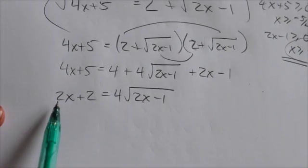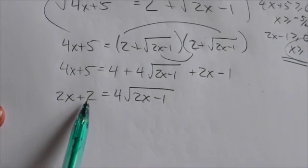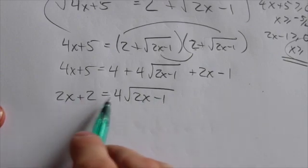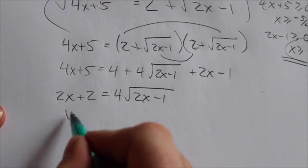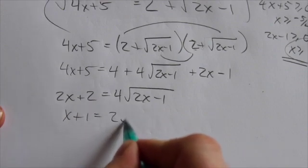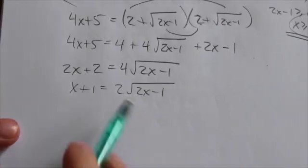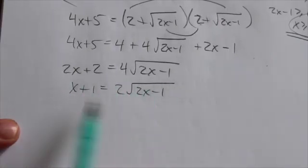Now I can see right now that there's a common factor of 2 to every term on both sides of the equation here. So I'm just going to divide out a 2 on both sides. That's going to get an x plus 1 equals 2 root 2x minus 1. Now the reason why I wanted to look at this question in particular is because of what's happening right here at this step.